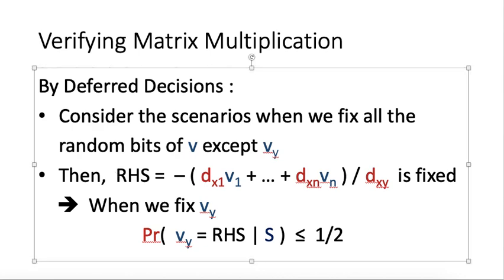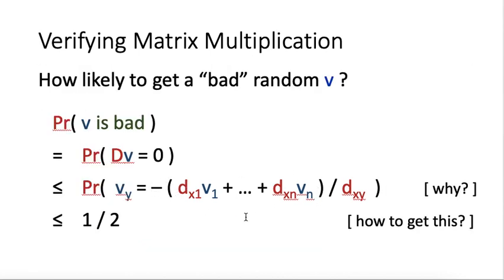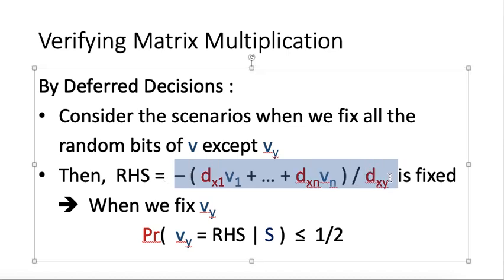In this scenario, the right-hand side of this term does not depend on Vy, so it will be a fixed value now. Now given this scenario S, when we try to fix Vy, what is the chance that Vy is equal to right-hand side? Because Vy is not fixed, when we fix it, we will either set it to be 0 or 1. But the right-hand side here is now a fixed value. If this fixed value is equal to 3.7, then no matter what Vy is, whether 0 or 1, the chance of Vy equal to right-hand side will be equal to 0 in this case.